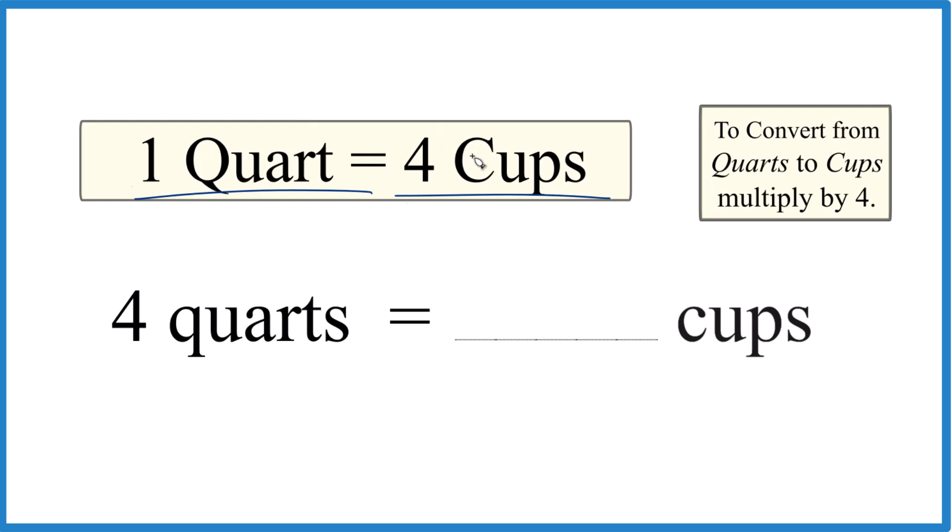So if one quart is four cups, four quarts is going to be four times four. You're going to get 16 cups, and that's our answer.